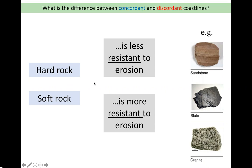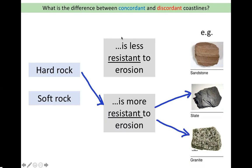The two grey boxes match to either hard rock or soft rock, then match this to the types of rock on the right-hand side. The answer is: hard rock is more resistant to erosion, and the two types of hard rock are slate and granite. Soft rock is less resistant to erosion so it erodes more quickly, and sandstone is an example of this. You can see nice layers in the sedimentary rock sandstone. Slate is a metamorphic rock, granite is an igneous rock and you can see it has crystals, like all igneous rocks do.